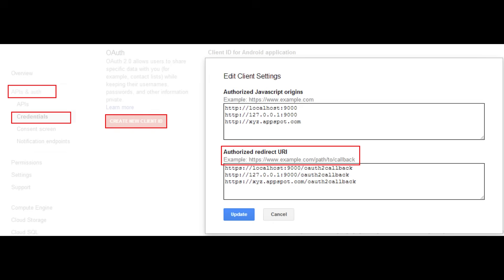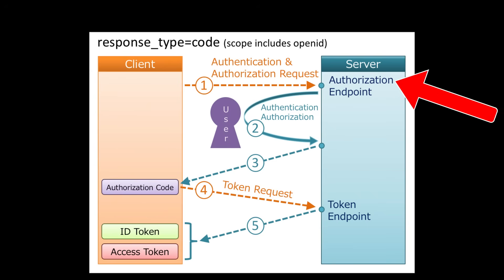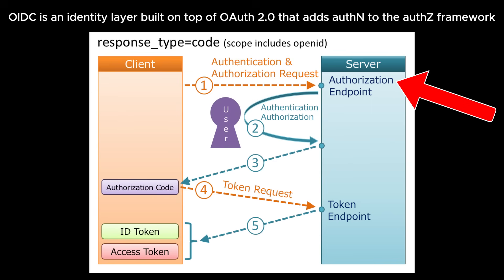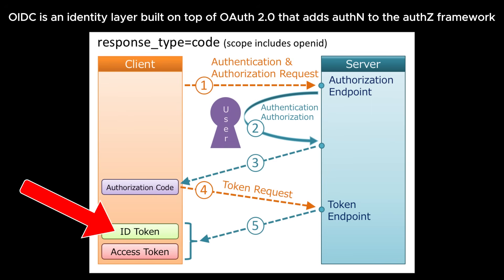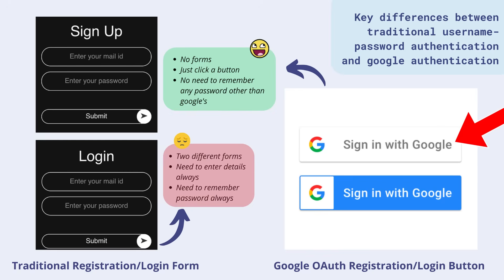Authorization servers strictly validate these URIs and often require exact matches with registered ones. It's also important to understand that OAuth by itself does not handle authentication — it is purely an authorization framework. However, many services extend OAuth with OpenID Connect, or OIDC, which adds an ID token — a special JWT containing user identity information — and standardized endpoints for user info. This combination enables both authentication and authorization in one flow, allowing users to sign in with Google or sign in with Apple using OAuth infrastructure enhanced by OIDC.